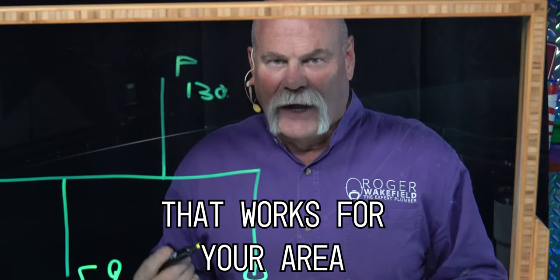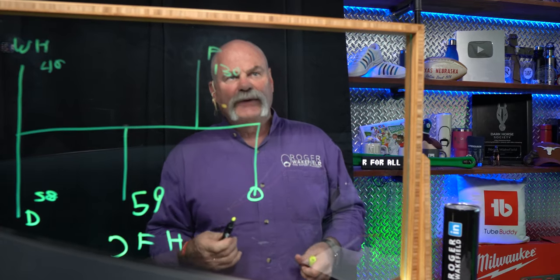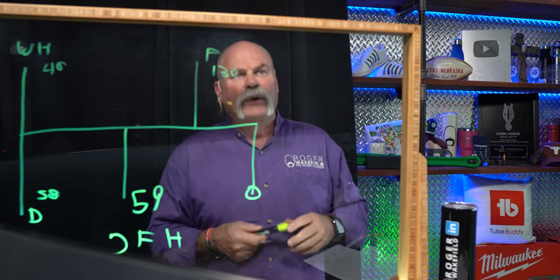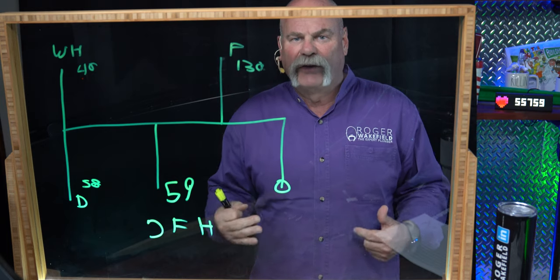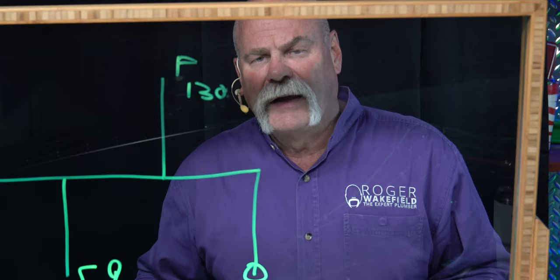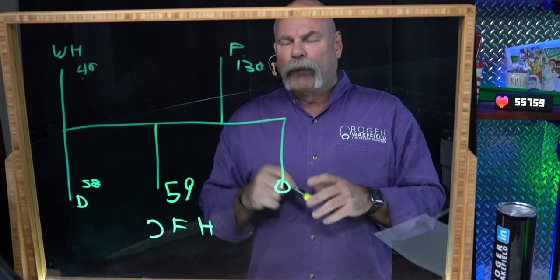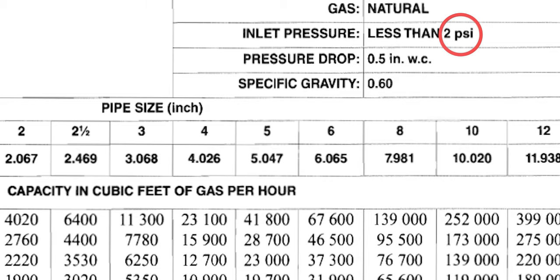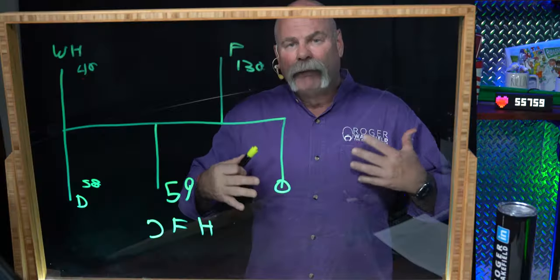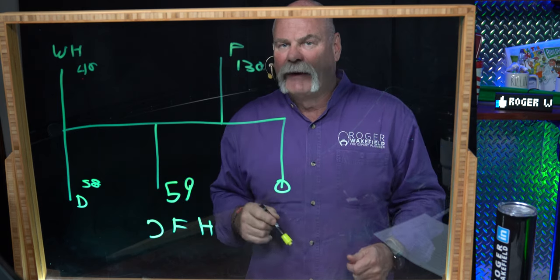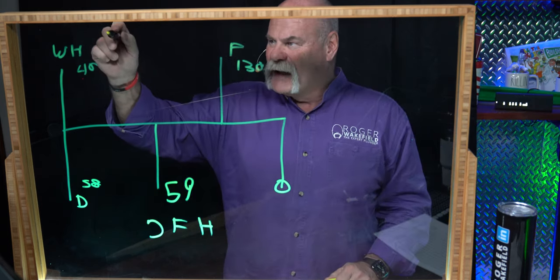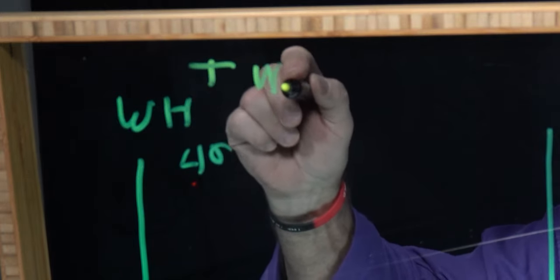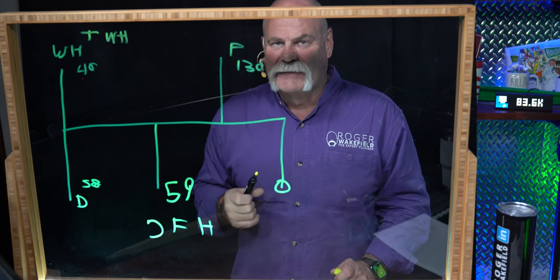There are different charts out there — look at the chart that works for your area, the one you're supposed to go by, and check the fuel gas code. Make sure you're doing everything based on the pressures you have and the pressure drop you have. What I'm going off of today is 2 PSI with a half-pound pressure drop. That's pretty conservative, but that's what I'm building this out on.